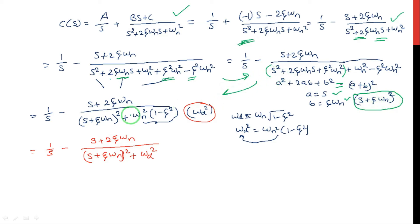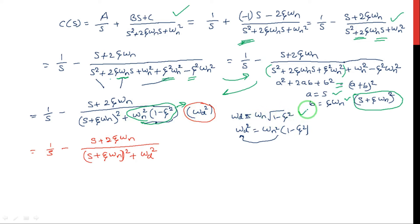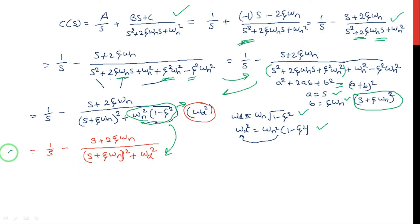After completing the square, we have (s + ζωn)² plus the remaining term ωn² − ζ²ωn². Taking ωn² as common, this becomes ωn²(1 − ζ²). We define ωd = ωn√(1 − ζ²), so squaring both sides gives ωd² = ωn²(1 − ζ²). We replace this complete term with ωd², giving the denominator as (s + ζωn)² + ωd². Now the equation is in a standard form.